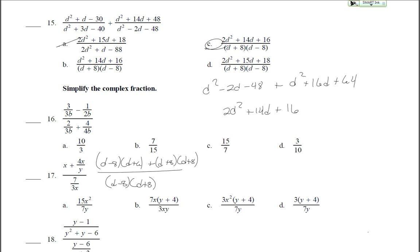That started out looking like a very complicated problem with many factors in both numerator and denominator, but once factored you can cancel two sets — the d minus 5 and d plus 6 — making it simpler. Multiply the remaining binomials together: d squared minus 2d minus 48, plus d squared plus 16d plus 64. Combining like terms gives 2d squared plus 14d plus 16, over d minus 8 times d plus 8.